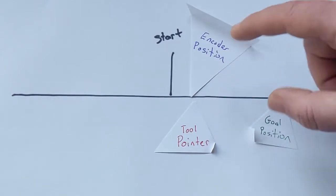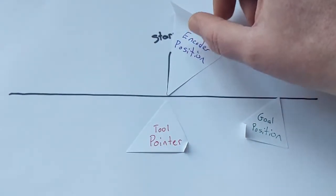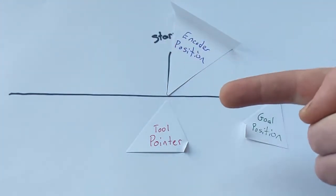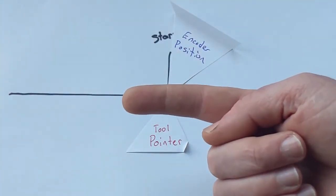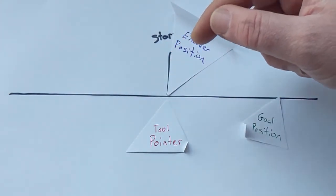And so one of the reasons this is so confusing is your starting position might be here and whether you're going this way or this way is one dimension and whether your encoder is ticking positive or negative is another dimension.